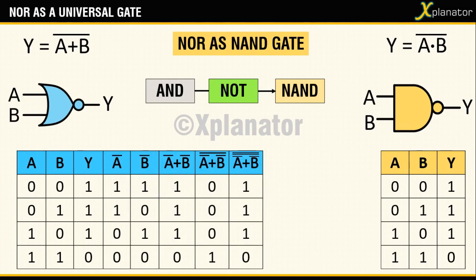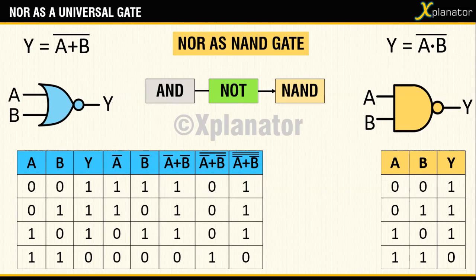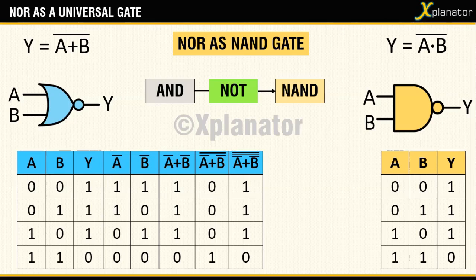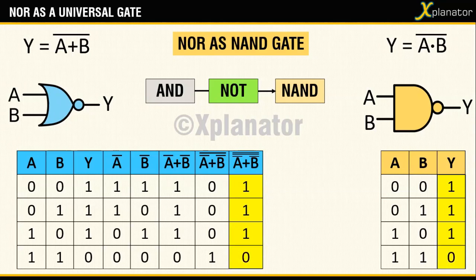You can verify it against the truth table. It is the same table which was shown previously for AND. The only difference here is that you got an extra column which inverts the output. Now if you compare both the outputs of the original NAND gate and the one which we just derived, you see the results are the same.